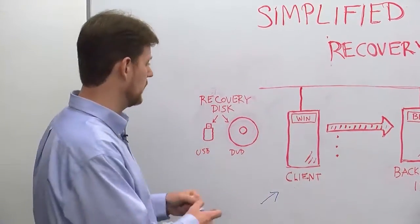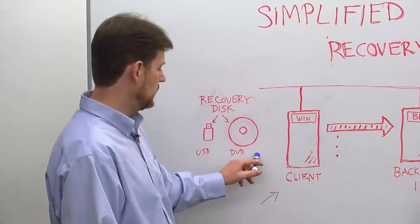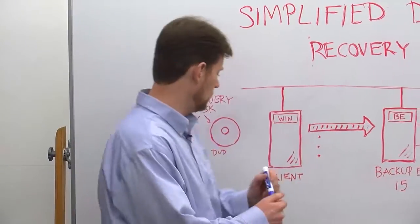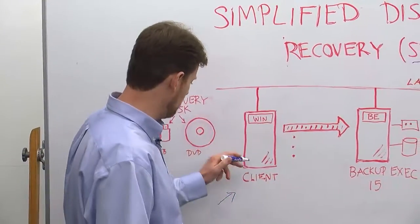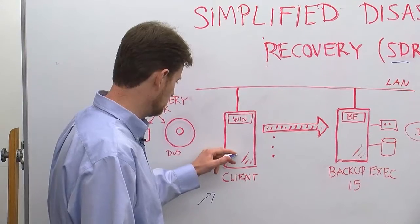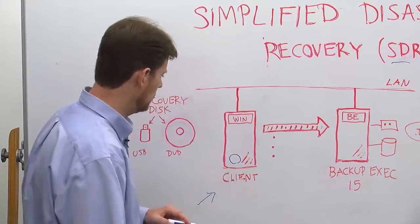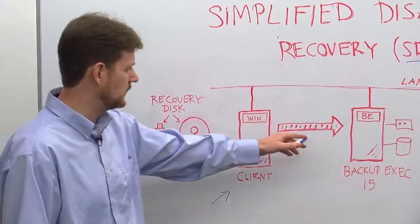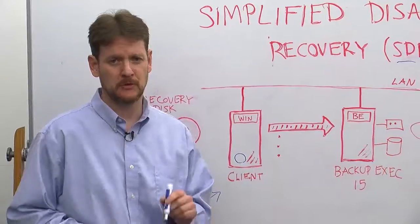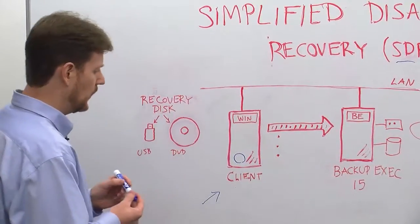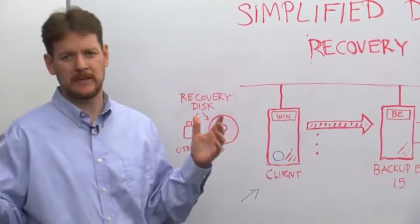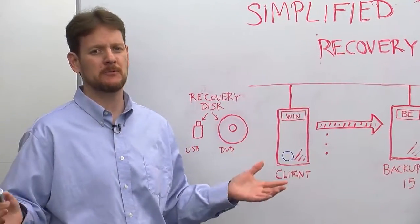The way that it works is you have a client being backed up by Backup Exec, and he'll have on him a Backup Exec agent. He is sending his backup data to the Backup Exec server for storage. Now, unlike a standard data file backup stream,